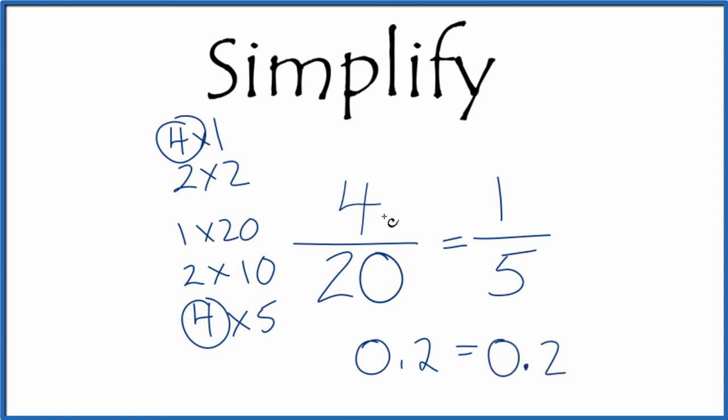They're equivalent fractions, it's just that we've simplified 4 over 20 down to 1 over 5. This is Dr. B and thanks for watching.